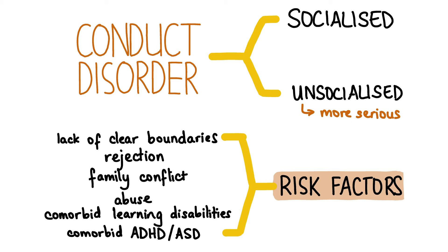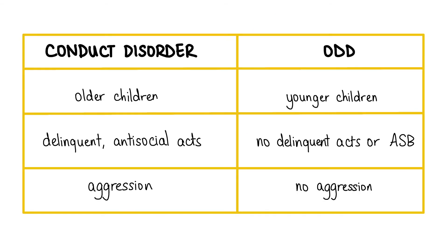Before a diagnosis of conduct disorder can be made, other mental conditions like depression, ADHD and ASD should be ruled out. Conduct disorders are managed by ensuring consistent care and parenting, school-based interventions like counseling at school, community talking therapy like Let's Talk, and behavioral therapy. Oppositional defiant disorder occurs in younger children and is characterized by defiance, mild aggression, disobedience and disruptive behavior. ODD is managed with behavioral therapy and parental training.